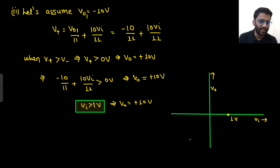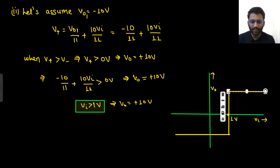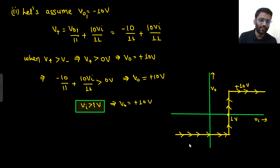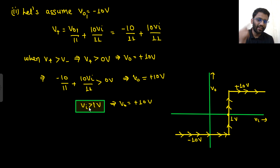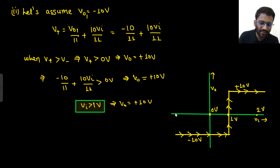Whatever you assume first, you have to draw initially from that state. We assumed V_out = minus 10 initially, so we draw starting from minus 10. If input moves from -2 to 0 volt, output is minus 10 - that is correct. But if input moves from 1 volt to 0 volt, output is still plus 10, not minus 10 - because we're moving in the direction starting from minus 10.